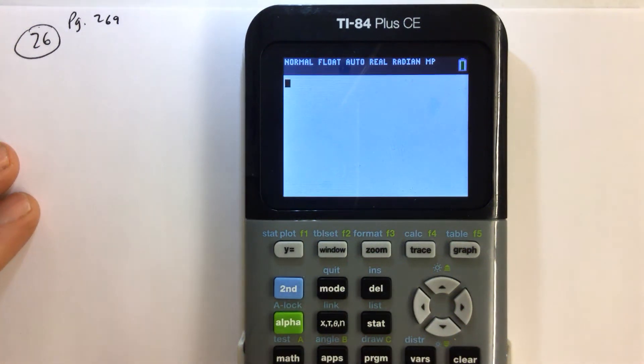For problem number 26 on page 269, we're asked to find a quadratic model to represent the path of the javelin.